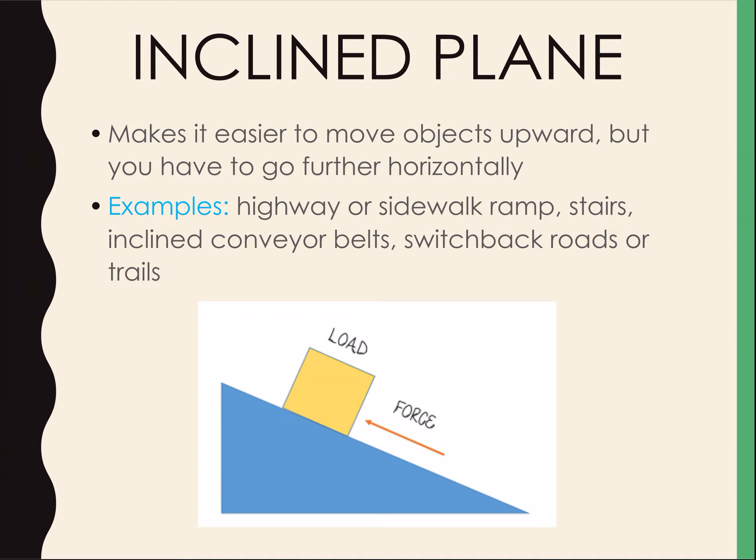An incline plane makes it easier to move objects upward, but you have to travel further horizontally. Even though you're going further than you would like, it makes the process easier because you can use more force when pushing things up. Examples include highway or sidewalk ramps, stairs, and conveyor belts in machines — those are all examples of an incline plane.